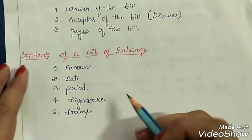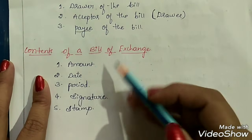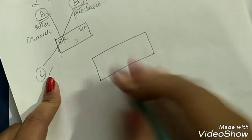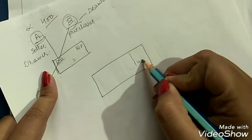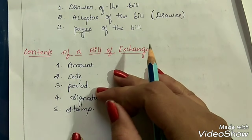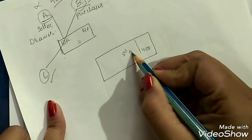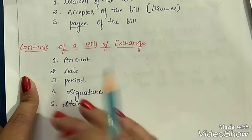Next, let's look at the contents of a bill of exchange — five things necessarily mentioned in a bill. First is the amount: for example, if A draws the bill on B, the amount of rupees 400 must be mentioned. Second is the date — the maturity date or due date, when the bill gets matured. For example, if B has agreed to pay on 3rd April, that becomes the due date.